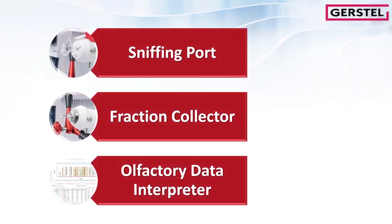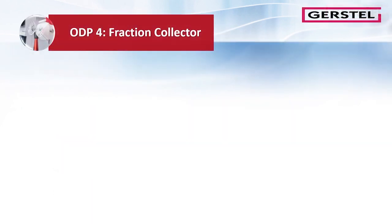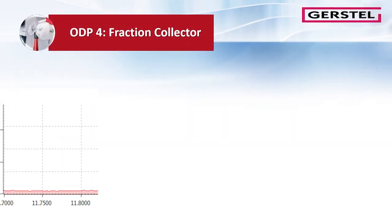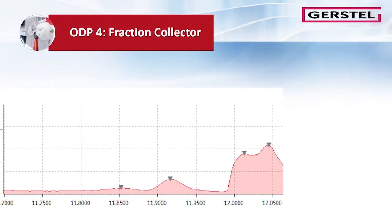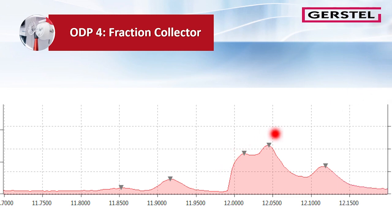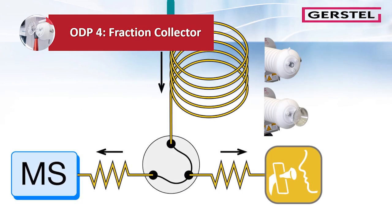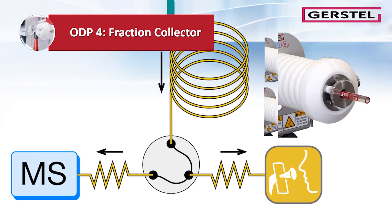In the next section, we talk about the fraction collector. The sniff and trap function allows eluent collection at any retention time, with easy installation of the Sorbent tube — just plug and trap. In this chromatogram, you see three coeluting peaks at the right-hand side. With a small modification of the ODP-4, we convert it to a fraction collector.